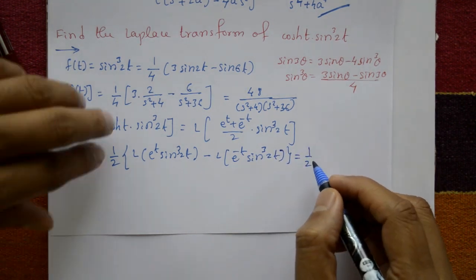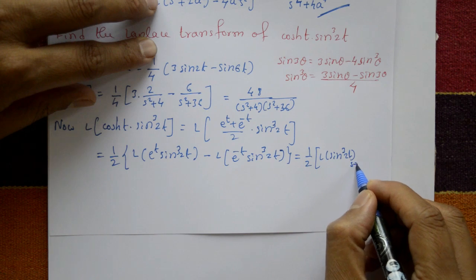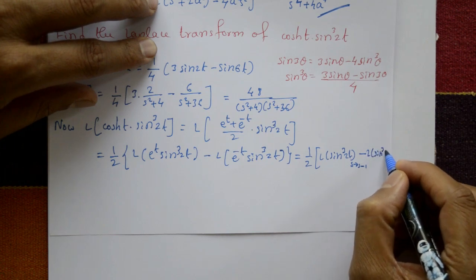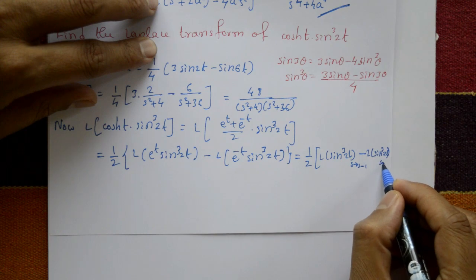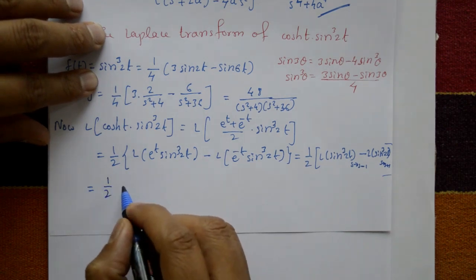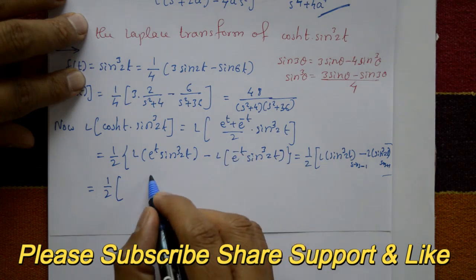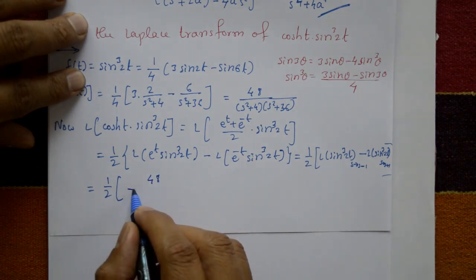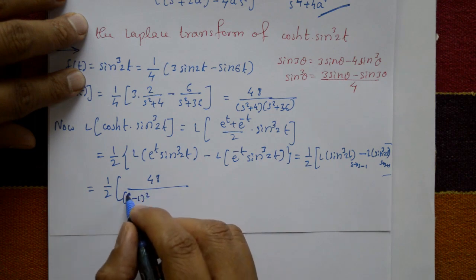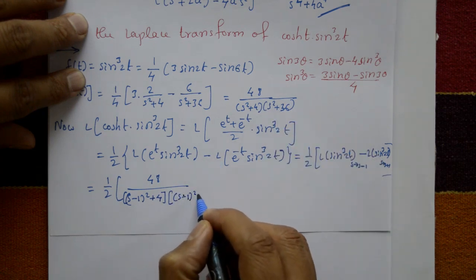Using the first shifting property: for eᵗ · sin³(2t), s becomes (s−1). So L{sin³(2t)} with s replaced by (s−1) gives 48 / [(s−1)²+4]·[(s−1)²+36], which equals 48 / [(s²−2s+5)(s²−2s+37)].